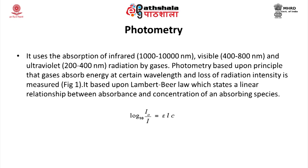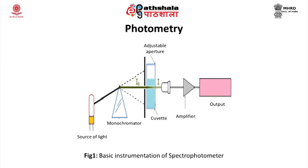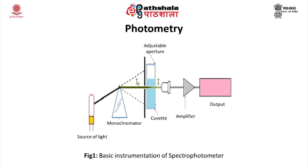The Beer-Lambert equation is: log₁₀(I₀/I) = εlc, where I₀ is the intensity of entering radiation, I is the intensity of emitting radiation, ε is the extinction coefficient, c is the concentration of the gas, and l is the optical path length. As shown in the figure, the basic instrumentation of the spectrophotometer includes a light source, monochromator, adjustable aperture, cuvettes, amplifier, and output display.